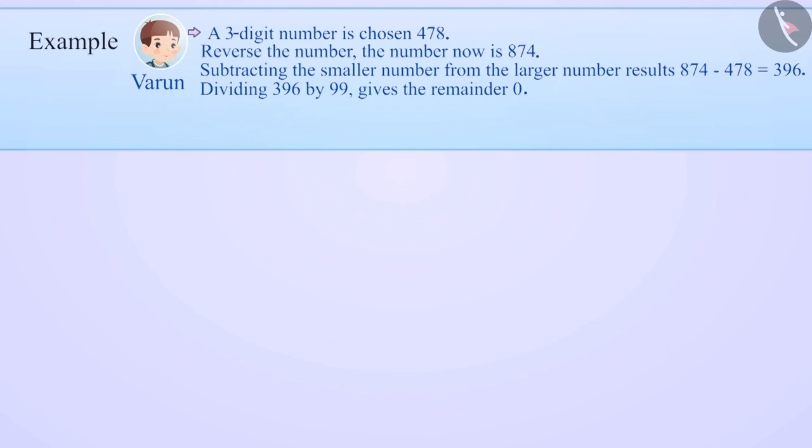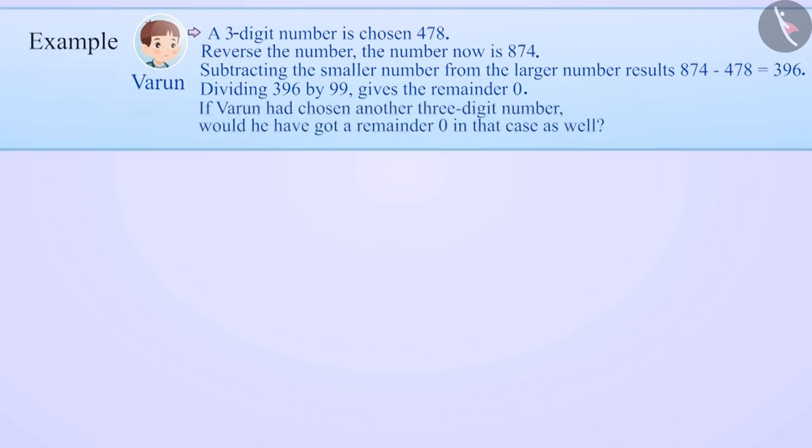He then divided 396 by 99, which gave him a remainder of 0. If Varun had chosen another three-digit number, would he have got a remainder of 0 in that case also?